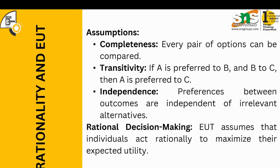The third assumption is independence — preferences between outcomes are independent of irrelevant alternatives. The irrelevant alternatives present around me would not impact how much I prefer something; preferences and alternatives are not related. Expected utility theory also assumes that individuals act rationally, maximizing their expected utility such that their probabilistic utility is attained to the maximum possible extent.